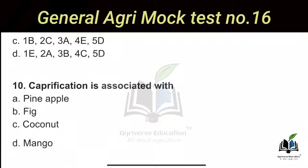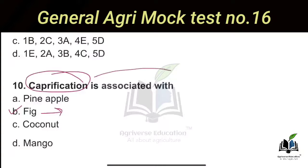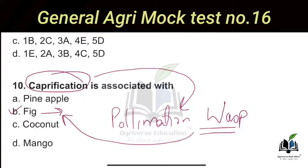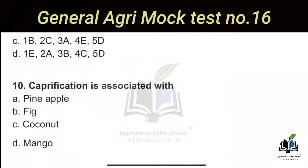The tenth question: Caprification is associated with which fruit? Option B — Fig. In the case of Fig, caprification is the process of pollination by a wasp. The scientific name of this wasp is Blastophaga psenes. So this wasp performs pollination in Fig, and this process is called caprification.